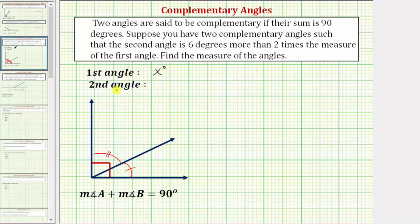And now we need an expression for the second angle given we know the second angle is six more than two times the measure of the first angle. So the expression would be six more than two times x. Well, two x would be two times x, and six more than two times x would be two x plus six. So the second angle has a measure of two x plus six degrees.